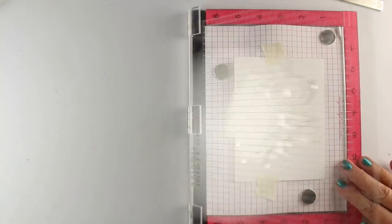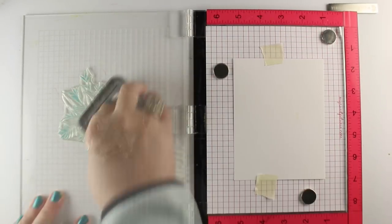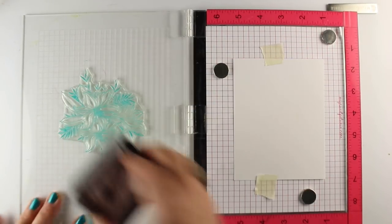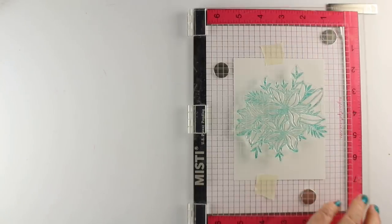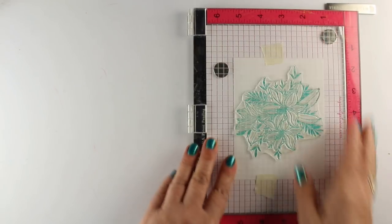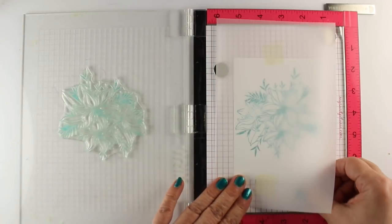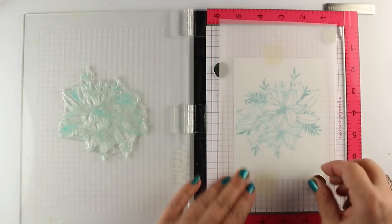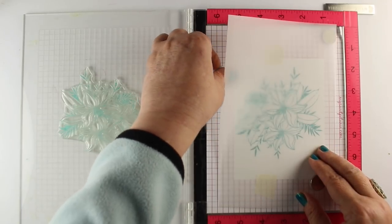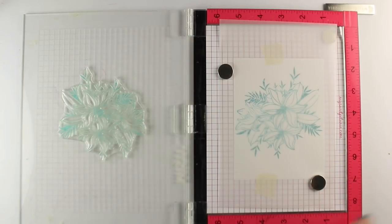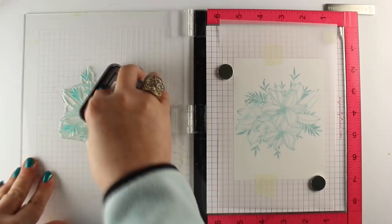I took a piece of scratch paper first, I just taped it down in the middle of the MISTI, because I'm going to use it basically for a template to follow along with the rest of the piece of vellum that I'm going to use. I have that one down, and I'm just going to randomly pick a place to start with the stamping.